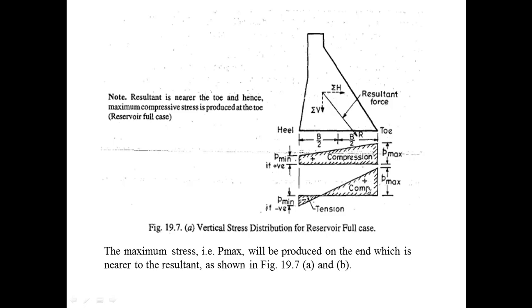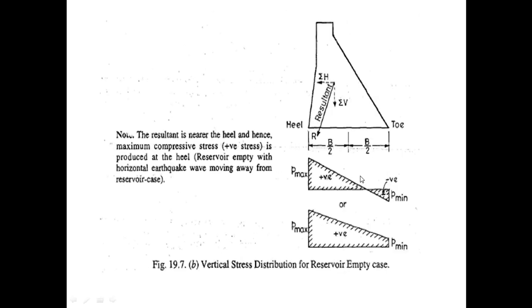If Pmin is negative, the maximum compression force is produced near the toe, which results in the crushing of the toe, and as a result the structure fails. This is the condition for vertical stress distribution when the reservoir is empty. In this case, the resultant will be near the heel, and the maximum positive compressive stress will be produced near the heel.